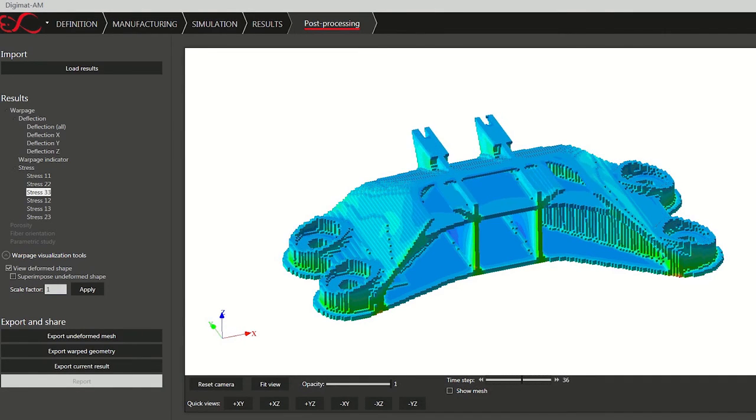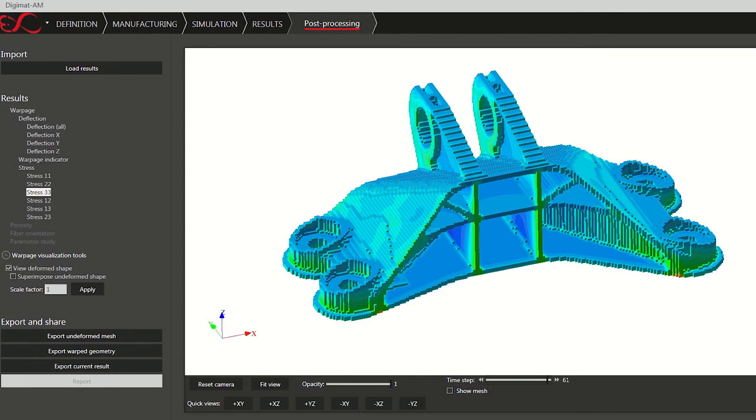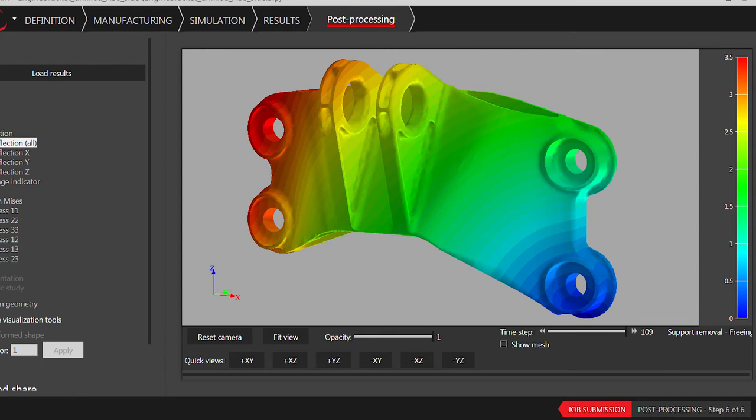Residual stresses can be obtained as well as the final deformed shape of the part. We will now distinguish the as-designed geometry from the as-printed geometry, essentially the final distorted shape of the part once the printing process is completed.